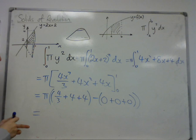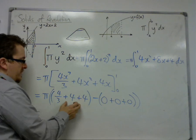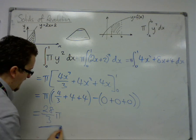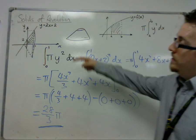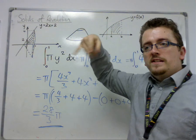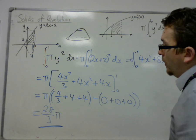So 4 thirds plus 4 plus 4, so that's 8, that's 24 thirds, so that's 28 thirds pi. And that is the exact volume that is generated that is in this cone with its end chopped off, with its top chopped off.